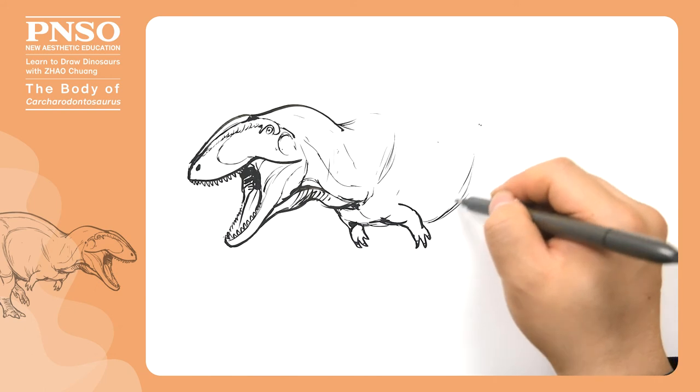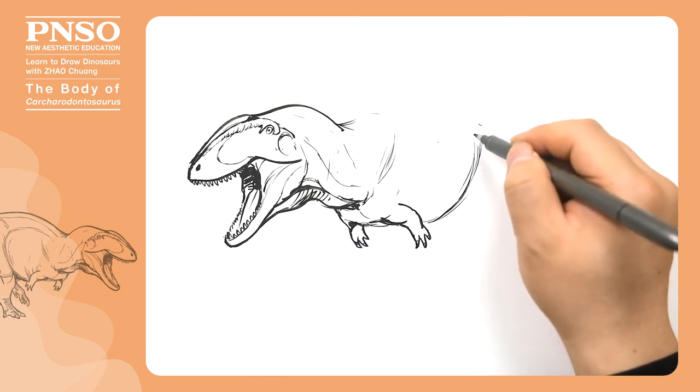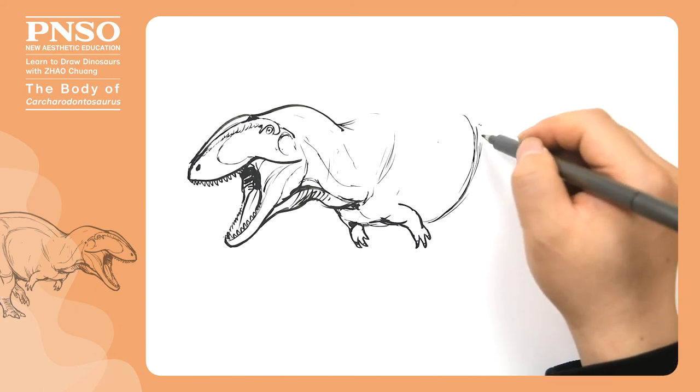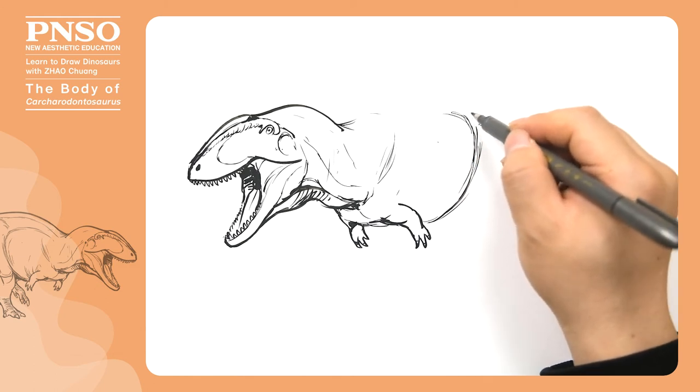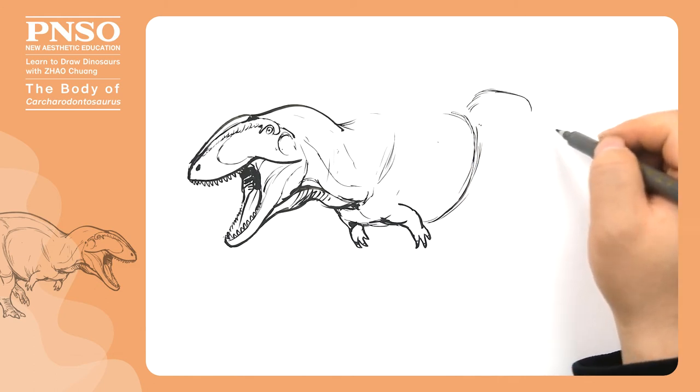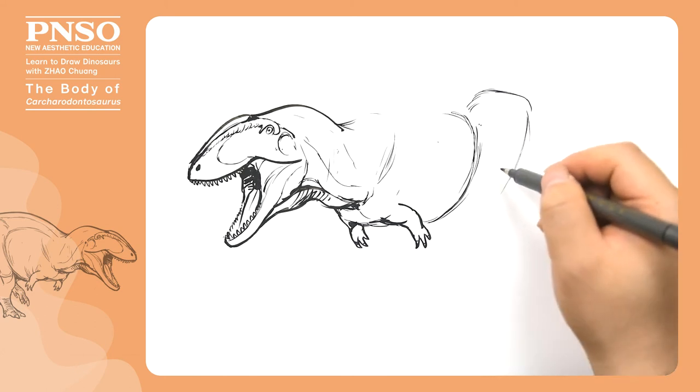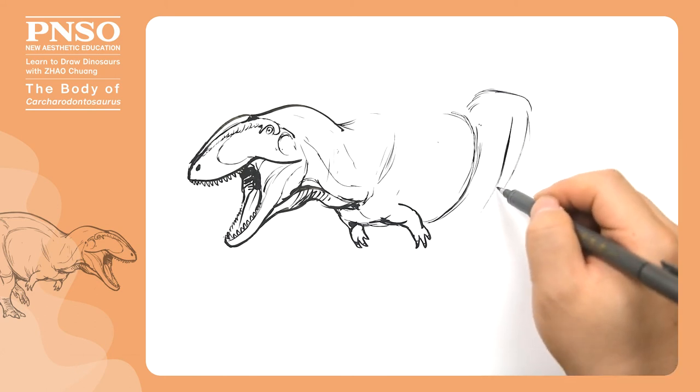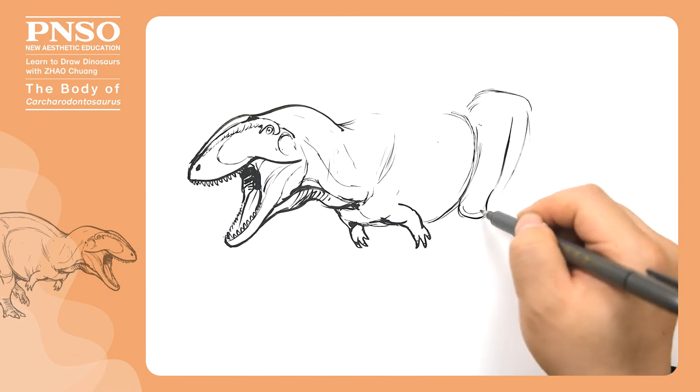Then, moving backward, we draw its belly. The legs of Carcharodontosaurus, followed by the pelvis, the thigh and knee.